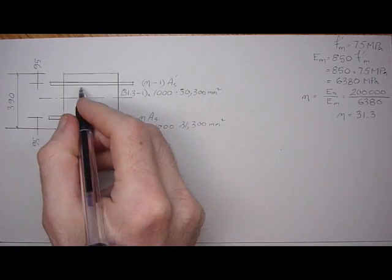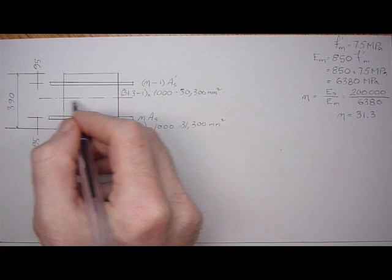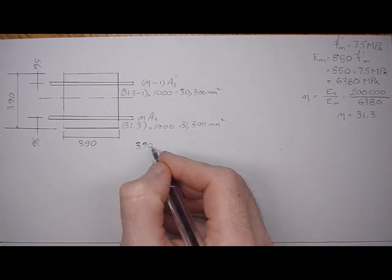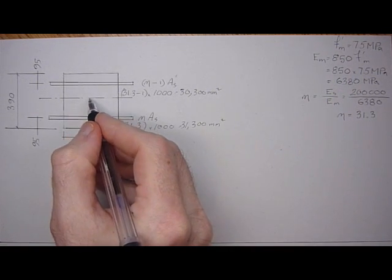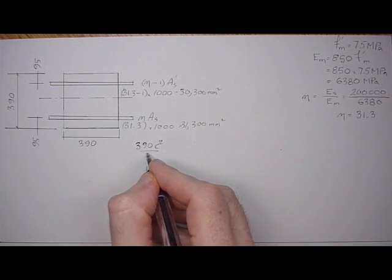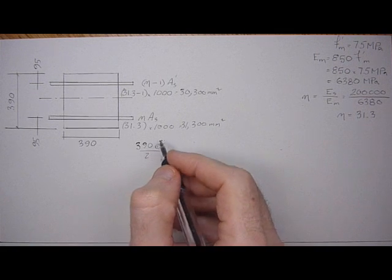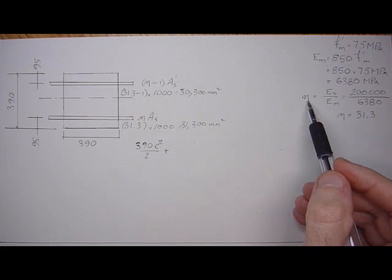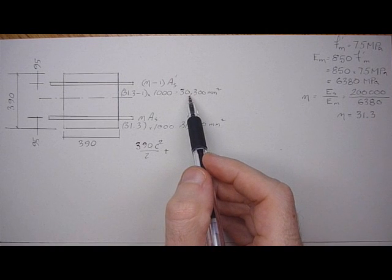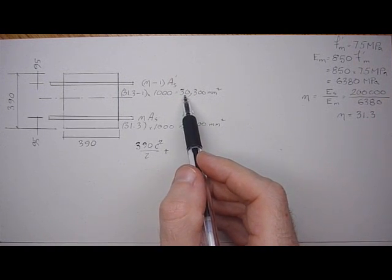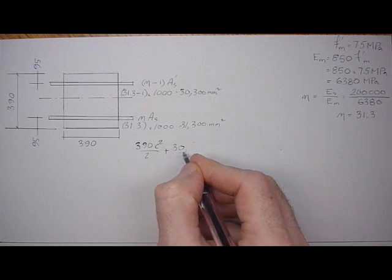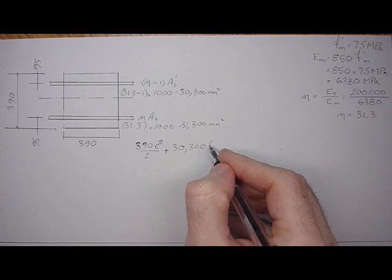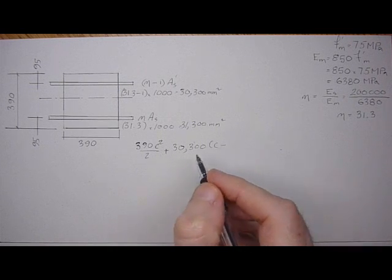Here's the equation: we have the area of the masonry above the neutral axis, that's 390 times C times this distance, half of C over 2, giving C squared over 2, plus the transformed area. I worked out the modulus ratio, the n value, which is 31.3. So the transformed area of this steel is 30,300 times its distance to the neutral axis, which is going to be C minus 95.